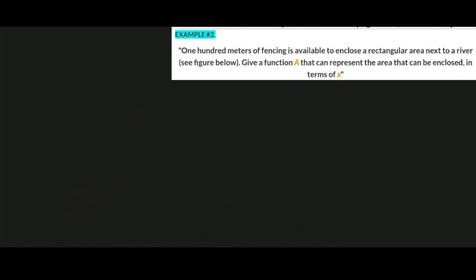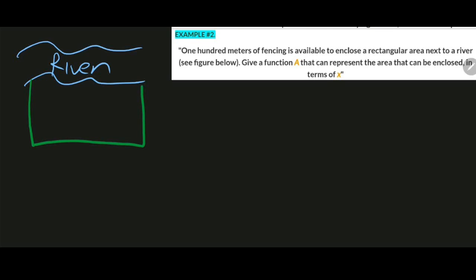Now let's answer item number 2. We have 100 meters of fencing available to enclose a rectangular area next to a river, and we need to give a function A that can represent the area that can be enclosed in terms of X. Let's draw our figure — we have the river here, and next to it a rectangular area. For a rectangle we have length and width, so let's represent the length as X and the width as Y.